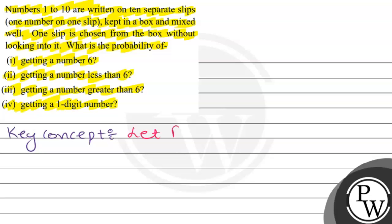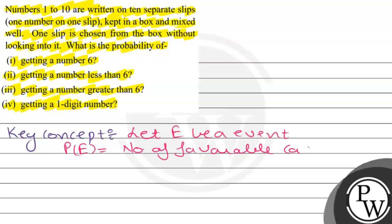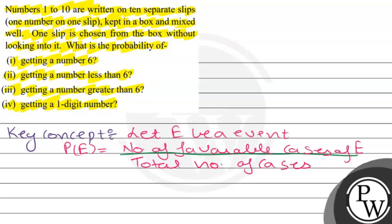The key concept: let E be an event. The probability of E is equal to the number of favorable cases of E divided by the total number of cases of E.